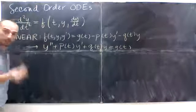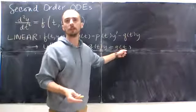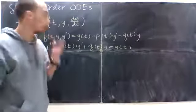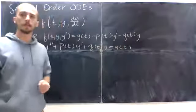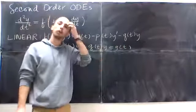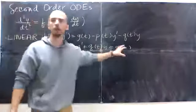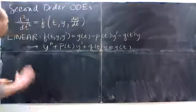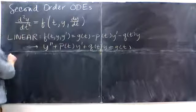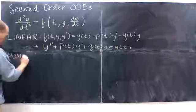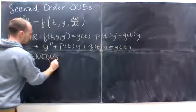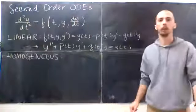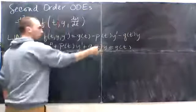And a homogeneous second-order ODE is going to be where this g(t) is constantly zero. In the last few videos of this series, I'm going to be talking to you about when g(t) is non-zero. Homogeneous is where g is equal to zero.